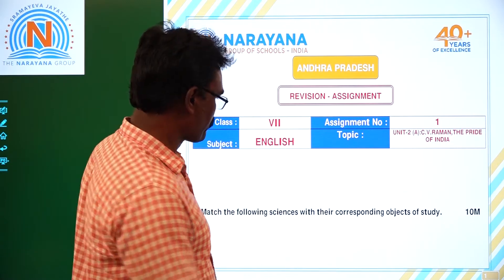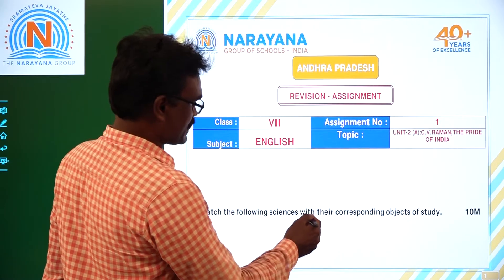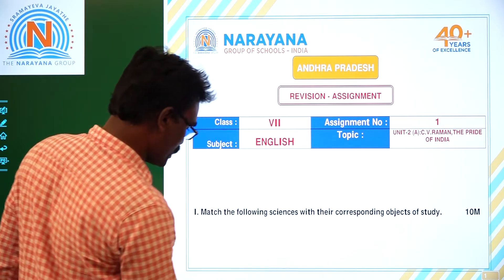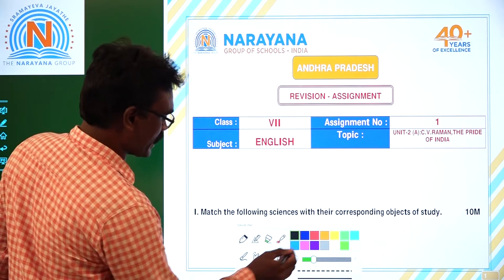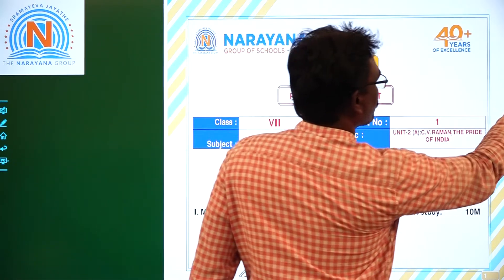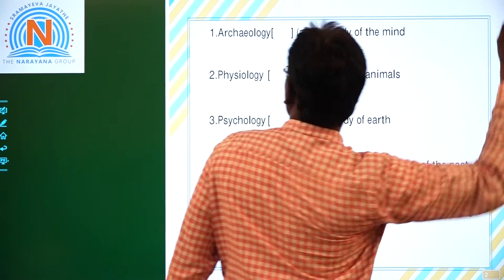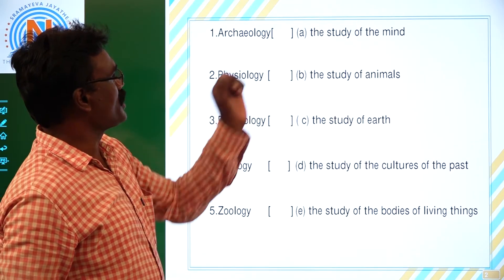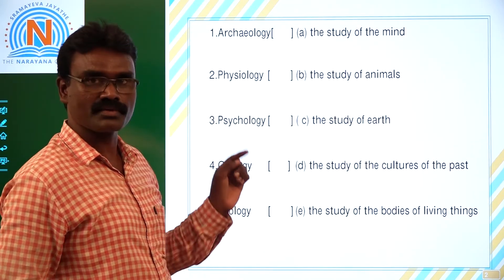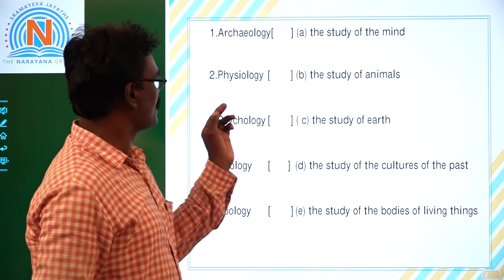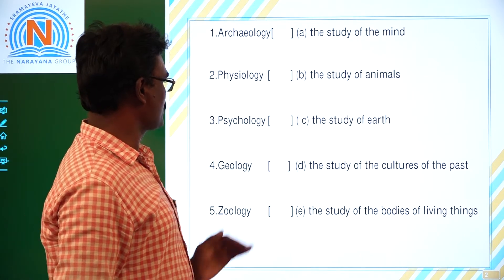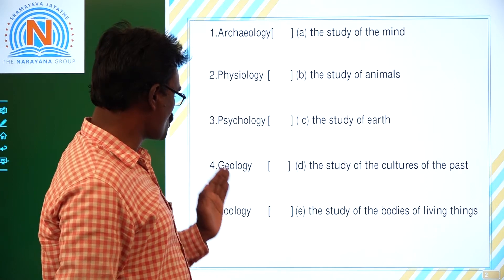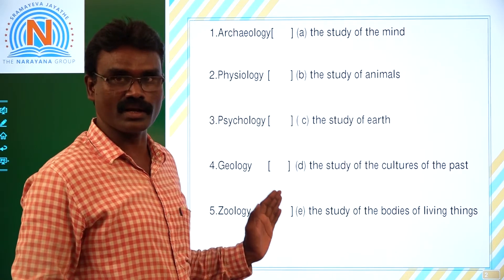Right children? Match the following sciences with their corresponding objects of study. Let us see the matching. First one: archaeology. Second one: physiology. Third one: psychology. Fourth one: geology. Fifth one: zoology.